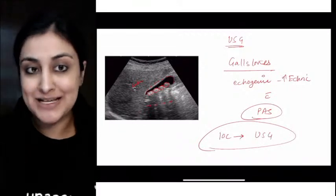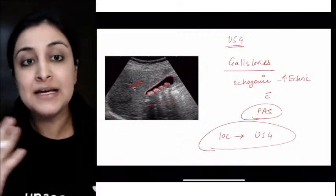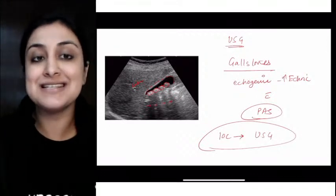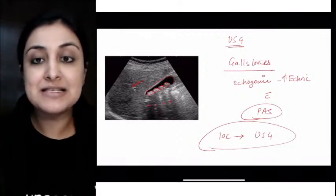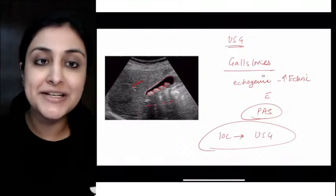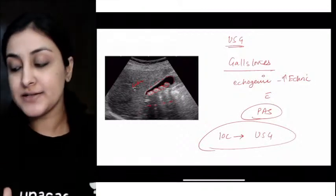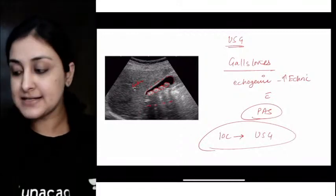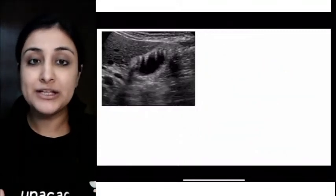Investigation of choice for gallstones, remember the ball stops at ultrasound. Ultrasound is initial and best for gallstones. We don't do CT because 90 percent are radiolucent, so no point doing CT for gallstones. Everywhere else, if they ask investigation of choice for renal stones or salivary stones, you will say it is non-contrast CT.